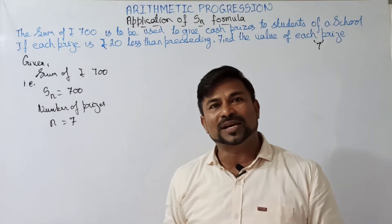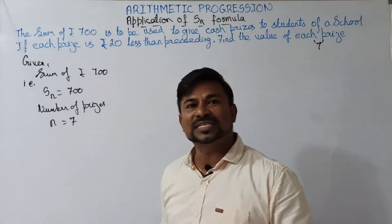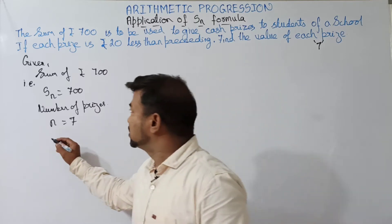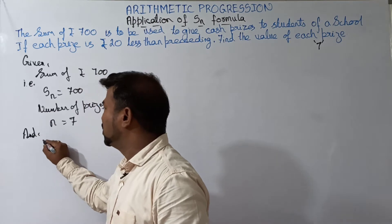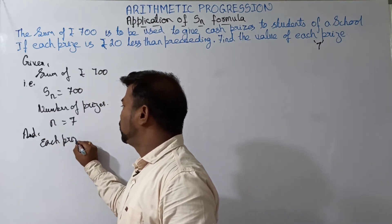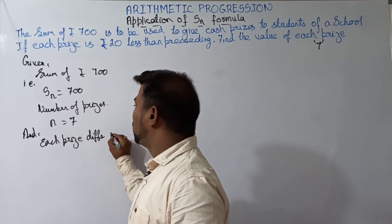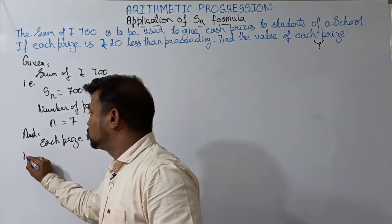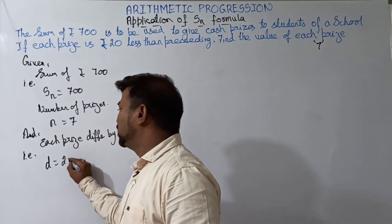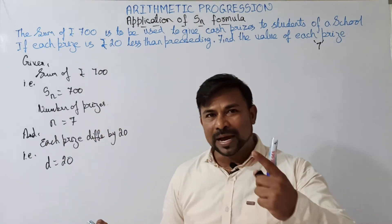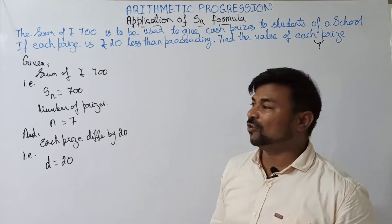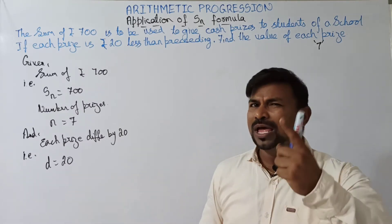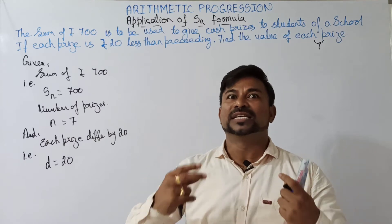The total number of prizes are seven. What is the condition given? Each prize is differing by a value of 20 rupees. Each prize differs by 20 rupees, so we can take that straightaway as d is equal to 20. So we got the concept: the total money is 700, the number of prizes is 7, and each one is differing by 20.